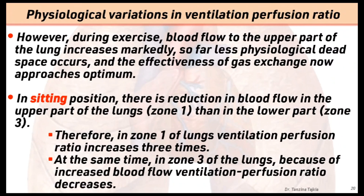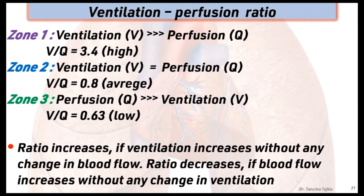In the sitting position there is reduction of blood flow in the upper part of the lung compared to the lower part. Therefore in zone 1 the ventilation-perfusion ratio increases about three times, while in zone 3 of the lung, because of increased blood flow, the ventilation-perfusion ratio decreases. The ratio increases if ventilation increases without any change in blood flow, and the ratio decreases if blood flow increases without any change in ventilation.